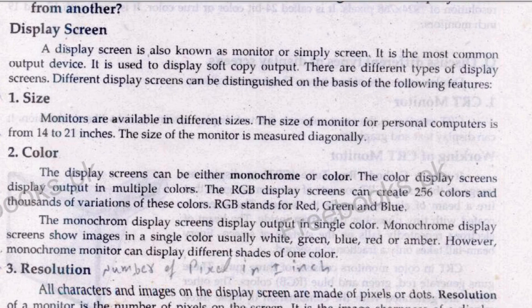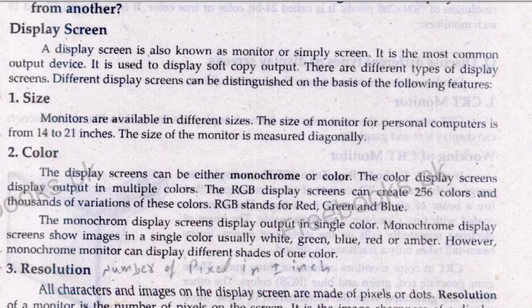The second feature that differentiates display screens is color. Display screens can be either monochrome or color. Monochrome means single color — not exactly black and white, because those are two colors. Think of filters on your mobile where the entire screen appears in one color, like completely green or purple. So monochrome display screens show output in a single color. Color display screens, on the other hand, display output in multiple colors.